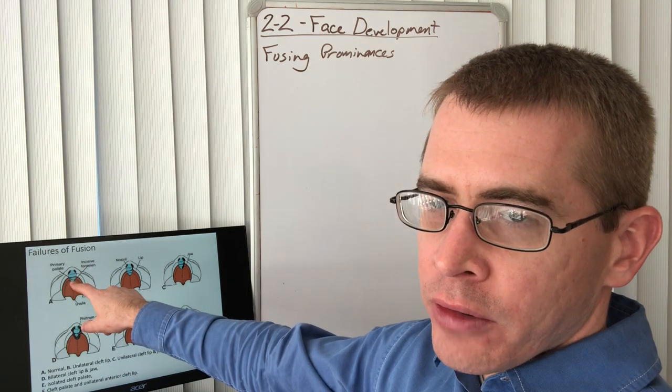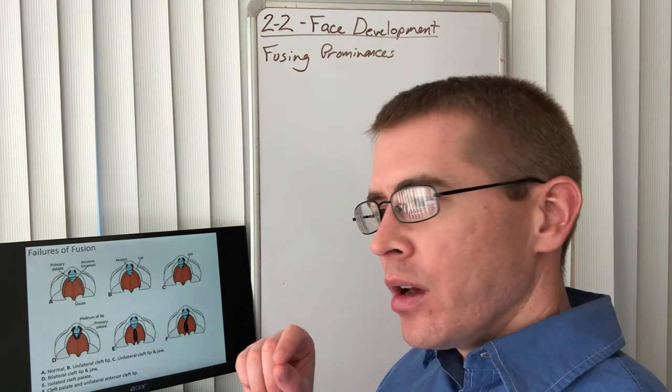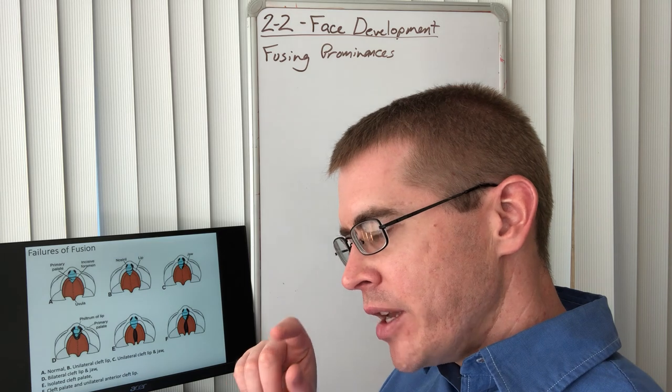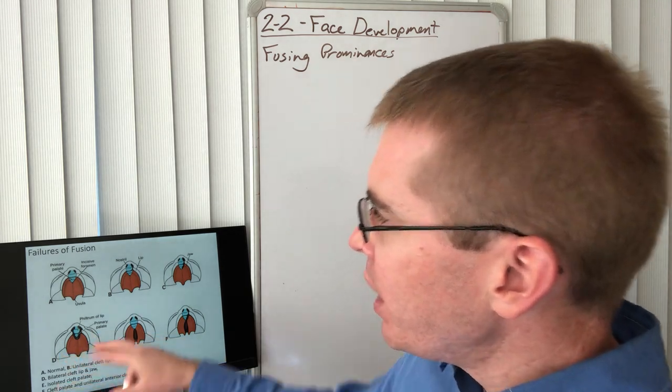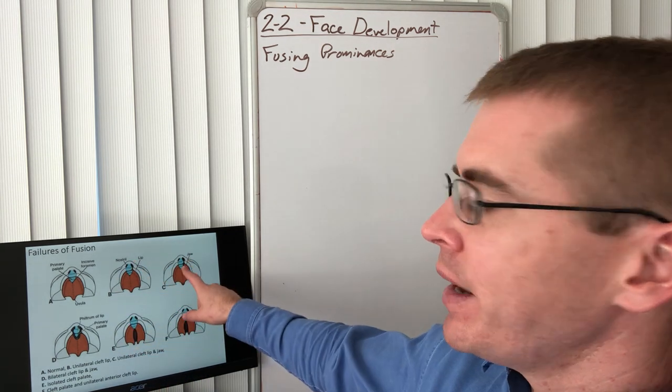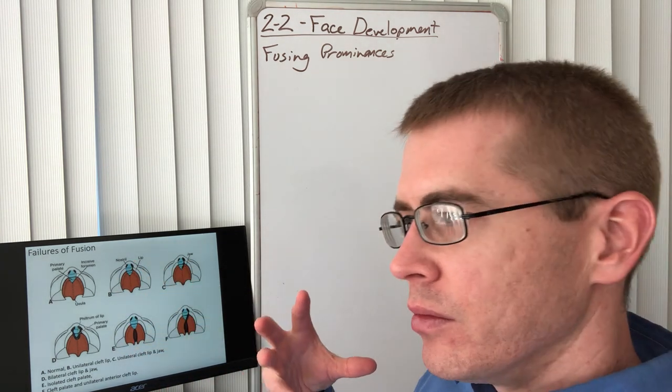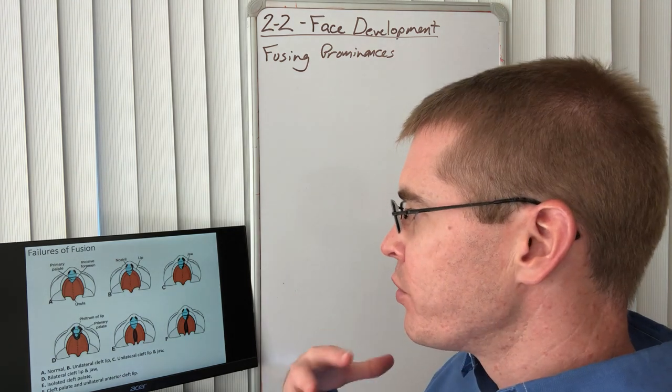Except for a small little foramen, incisive foramen, through which the nasopalatine nerve travels to supply that region. But any of these different regions can end up not fusing appropriately.